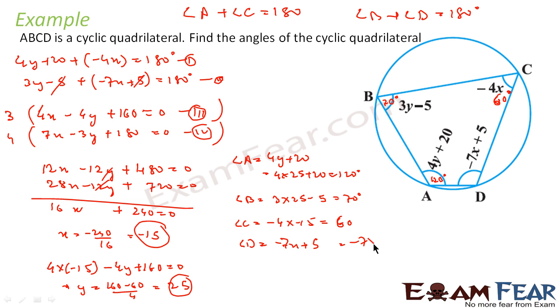Angle D is nothing but minus 7x plus 5, that is nothing but minus 7 into minus 15 plus 5, that is nothing but plus 105 plus 5.